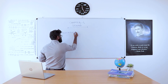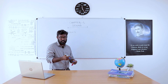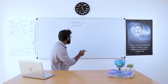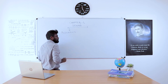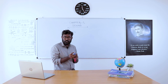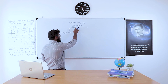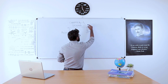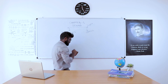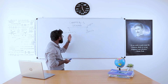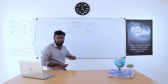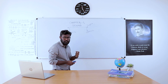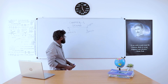Acoustics is a branch of physics — or more generally, a branch of science — which deals with the study of sound. And the branch of physics which deals with the study of light is called optics. These are two branches of physics: acoustics deals with sound, and optics deals with light.